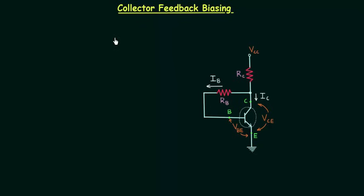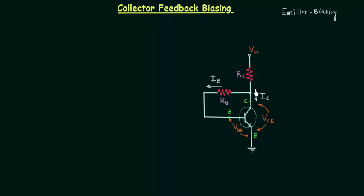In this lecture we will learn collector feedback biasing. In the case of emitter biasing, we introduce emitter resistance and because of it the stability of the operating point increases. The stability of the operating point can also be improved by the introduction of feedback from collector to base, and this is what we are doing in collector feedback biasing.